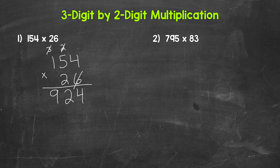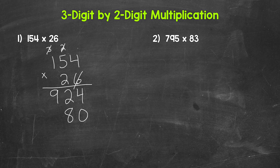Now we need to do 154 times 20, so we're moving over to that two in the tens place. Since we're moving over to that two in the tens place and we have 20, we need a zero right here. Then we can multiply. We'll start with two times four — that gives us eight. Then we have two times five, that's 10, carry the one. And then we have two times one, which is two, plus that one is three. So 154 times 20 equals 3,080.